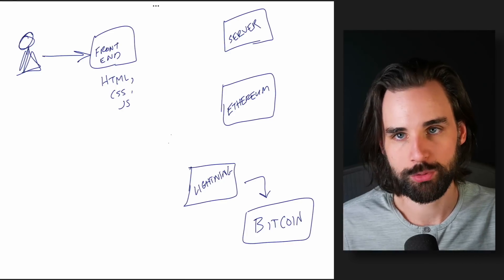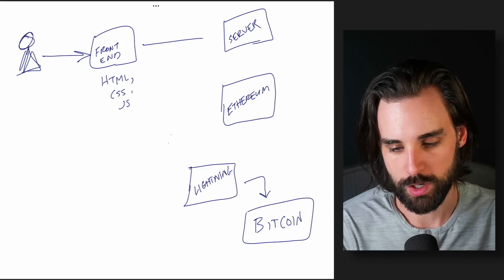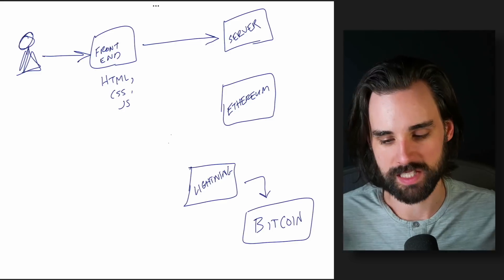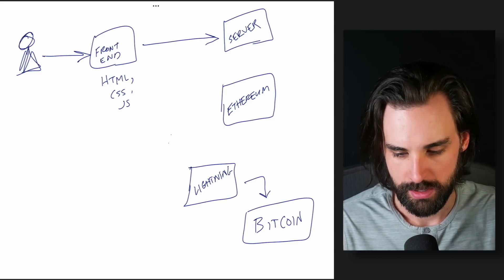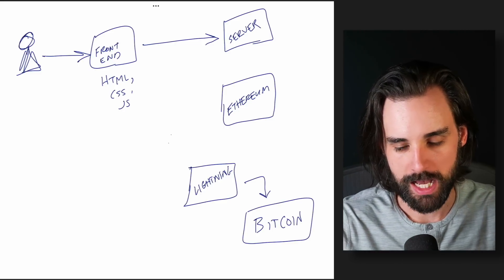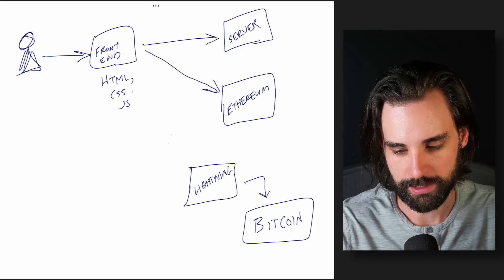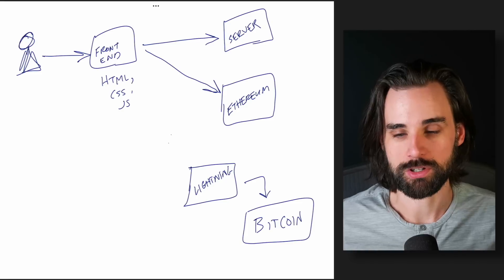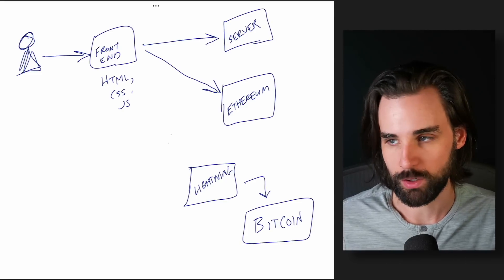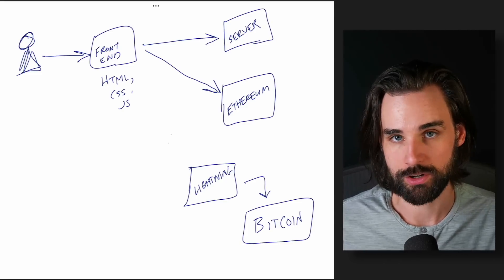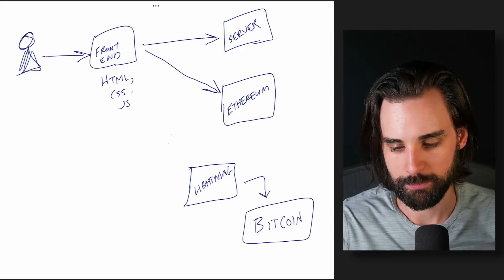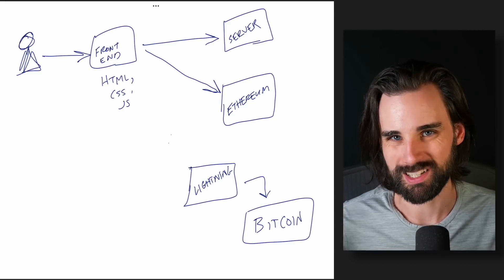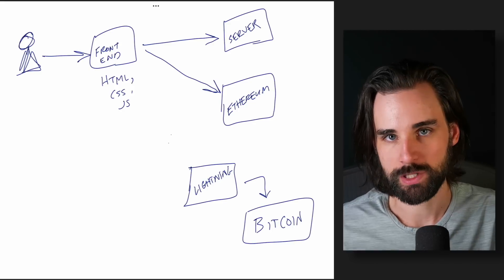In a Web 1.0 or Web 2.0 paradigm, that front end talks to a web server — that's where all the data and programs live. In a Web 3.0 paradigm, that website talks directly to a blockchain like Ethereum. Ethereum is a blockchain that supports smart contracts, has its native cryptocurrency Ether that pays gas fees, and runs validators for stakers on ETH 2.0. That's the Web 3.0 paradigm, along with other EVM-compatible blockchains and smart contract platforms that essentially try to do the same thing.